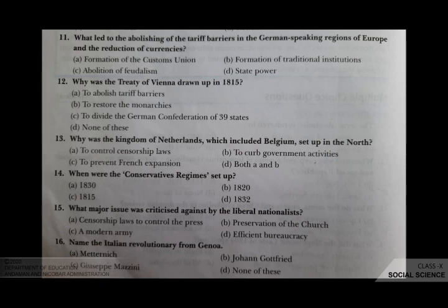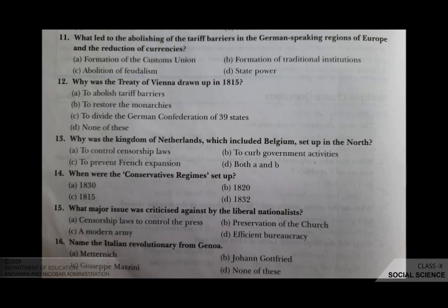Why was the Kingdom of Netherlands, which included Belgium, set up in the north? Your options are A to control censorship laws, B to curb government activities, C to prevent French expansion, D both A and B. The correct answer is C, to prevent French expansion.